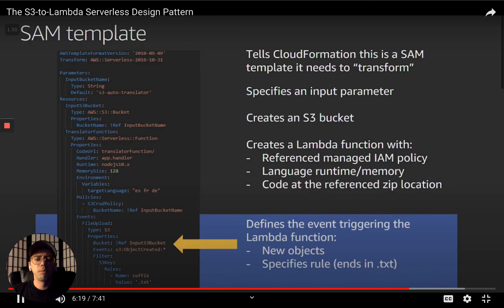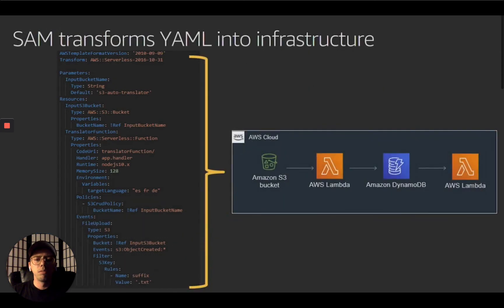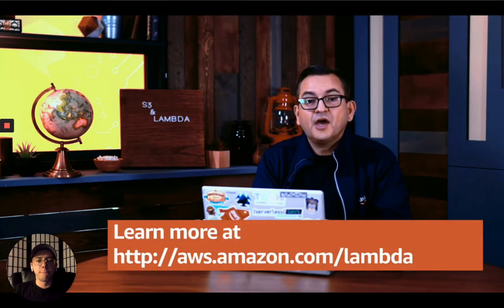When new objects arrive in the bucket it's looking for objects ending with .txt. When you run SAM deploy on this template, it creates the S3 bucket, the Lambda function, a DynamoDB table, and a second Lambda function. The S3 to Lambda pattern is very powerful but very simple — the services handle scaling automatically so your custom business logic only needs to focus on tasks that matter to your users. In the next videos, I'll walk through specific examples like automated language translation, workflow management, and sentiment analysis on audio recordings.